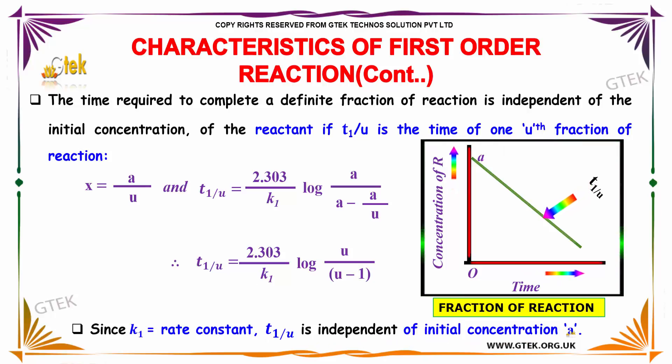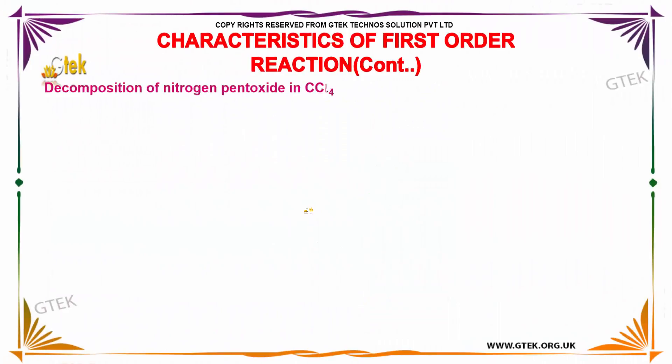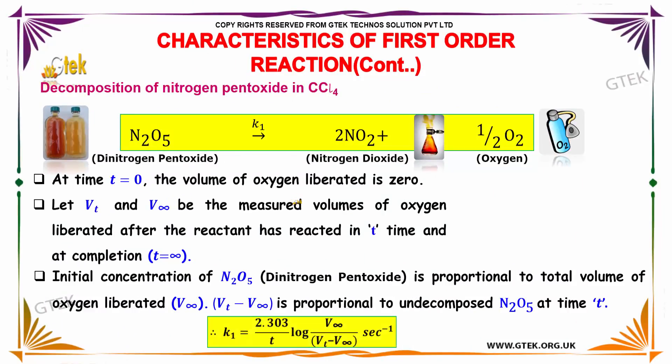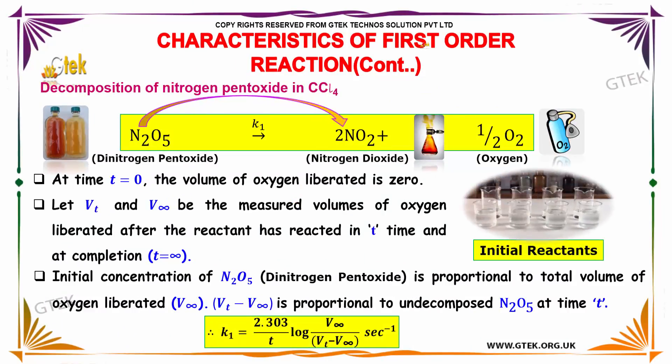Let's move on to a typical example of a first-order reaction. I've got nitrogen pentoxide (N2O5), it gives nitrogen dioxide and oxygen.